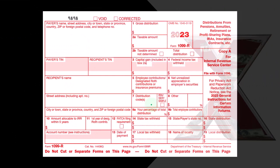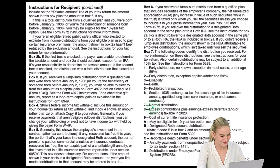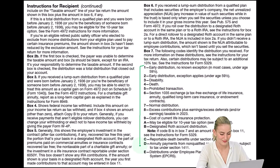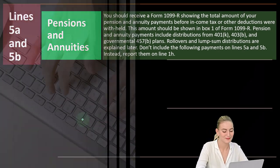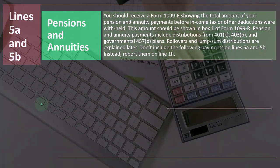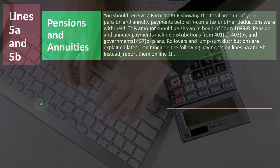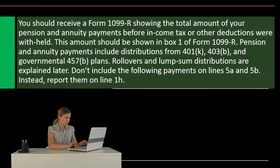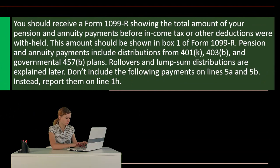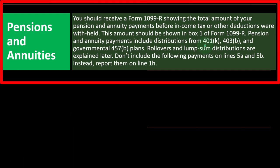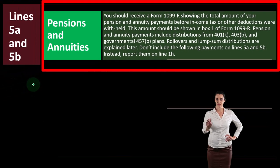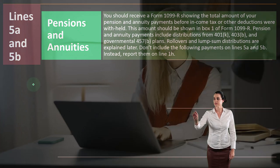If it was taken out early, you might have a distribution code indicating a penalty. The distribution codes can be seen on the actual 1099-R form and its instructions, or on the IRS website. Lines 5A and 5B cover pensions and annuities. You should receive a Form 1099-R showing the total amount of your pension and annuity payments before income tax or other deductions were withheld — shown in Box 1. Pension and annuity payments include distributions from 401k plans, 403b plans, and government 457 plans. Rollover and lump sum distributions are explained later.